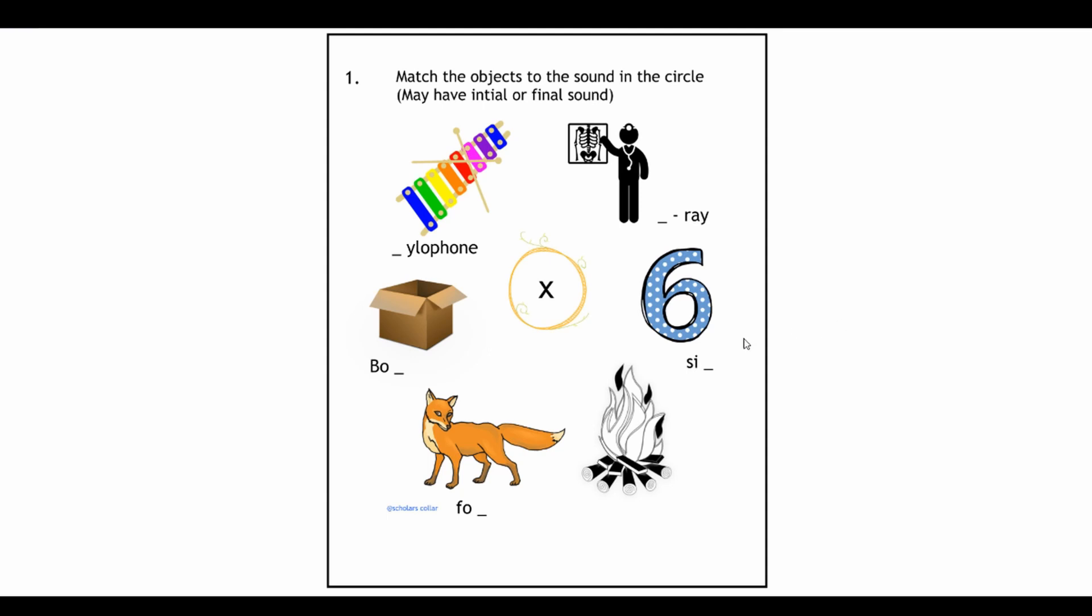In the first worksheet we have match the objects to the sound in the circle. Here we have xylophone X, so you're just going to add X in the space that's provided. X as an X-ray, you're going to go ahead and add X there. So X at the end, six, the fire, box X, and fox X at the end.